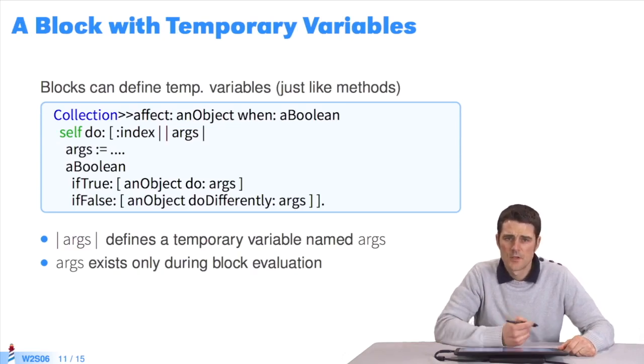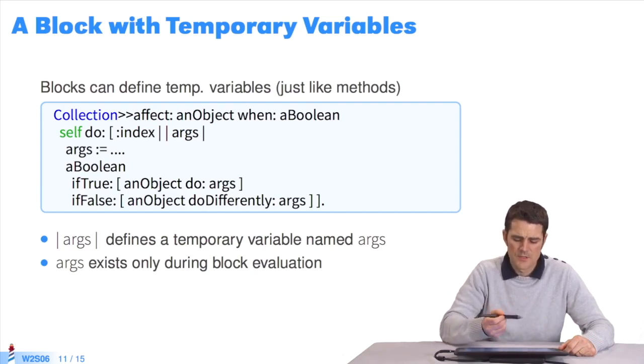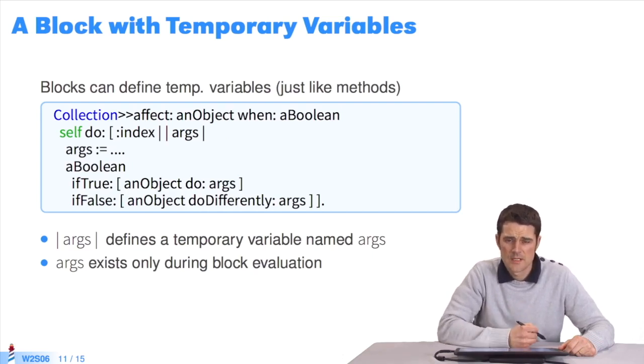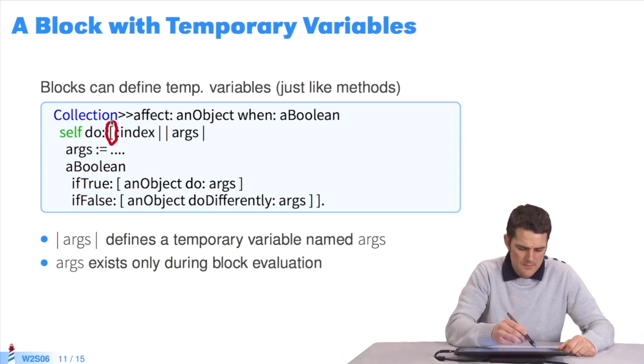Like methods, blocks can also define temporary variables. This example is an actual example. It comes from the class collection. The block starts here. It ends there.